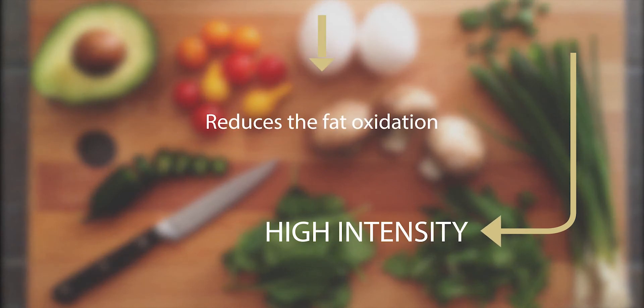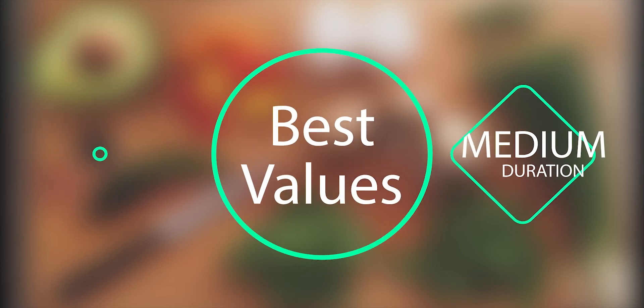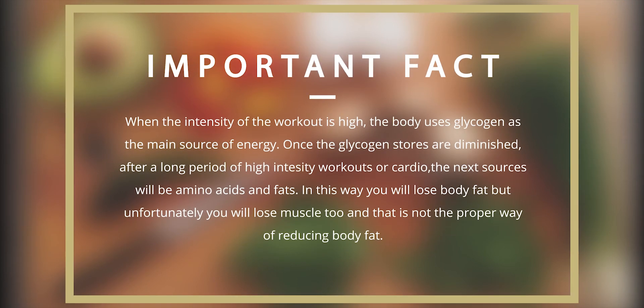Fat oxidation: the high intensity of the workout reduces the fat oxidation. The low to medium intensity and medium duration offers the best values for burning fat. Important fact: when the intensity of the workout is high, your body uses glycogen as the main source of energy. If you exercise or do high intensity cardio for a long period of time, the glycogen deposits can be diminished and the next sources of energy will be amino acids and fats. So by doing that you can lose fat but unfortunately you will lose muscle too, and that is not the proper way to reduce body fat.